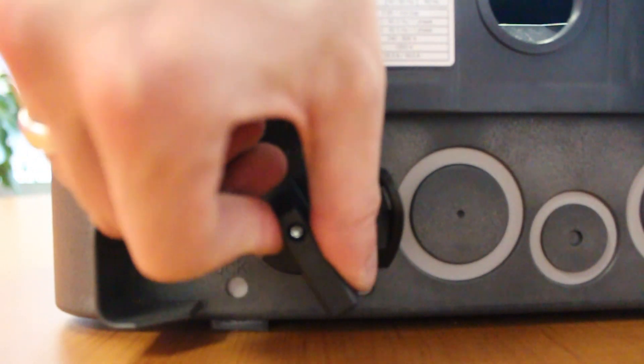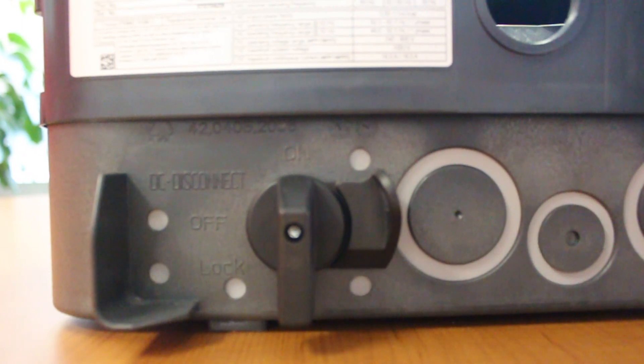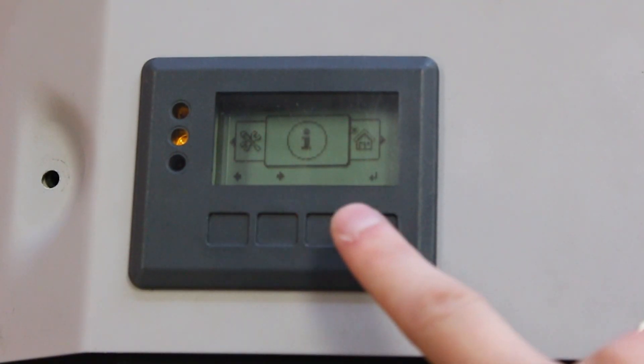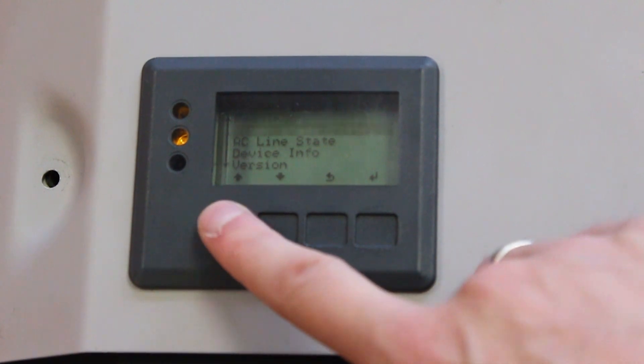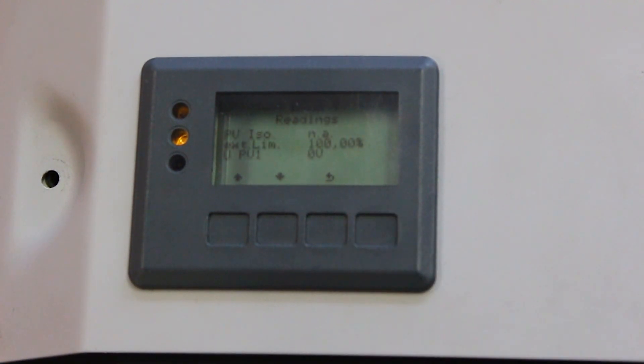Ensure that the DC switch of the inverter is on. Then navigate to the info menu, then go to readings within the info menu and within the readings menu look for PV ISO.